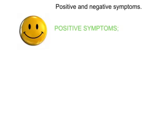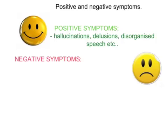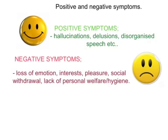Positive and Negative Symptoms. Positive Symptoms include hallucinations, delusions, disorganised speech, etc. They are called positive because they are in addition to the individual's normal behaviour, and they can be treated with antipsychotics. Negative Symptoms include loss of emotion, interest, pleasure, social withdrawal, and lack of personal welfare and hygiene. These are called negative symptoms because they cannot be treated with antipsychotics alone and need another form of therapy, such as cognitive behavioural therapy, to improve.